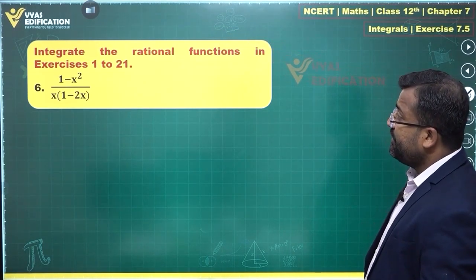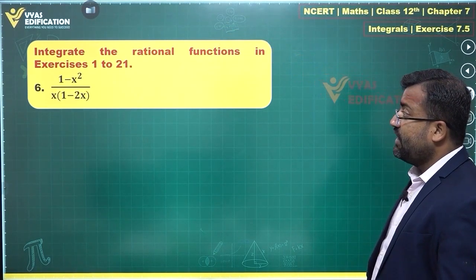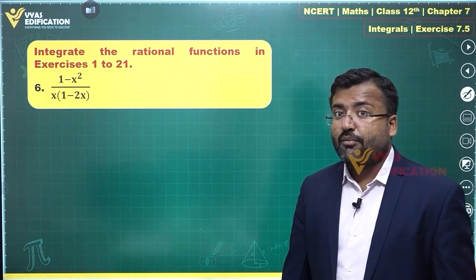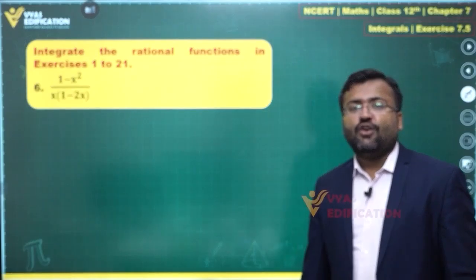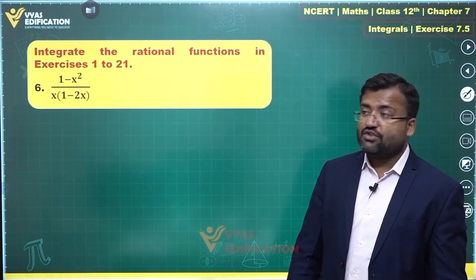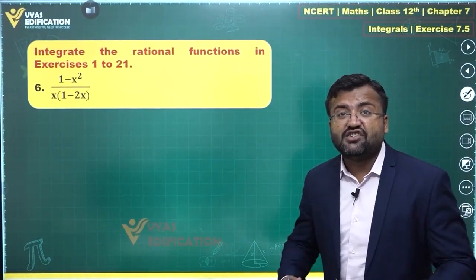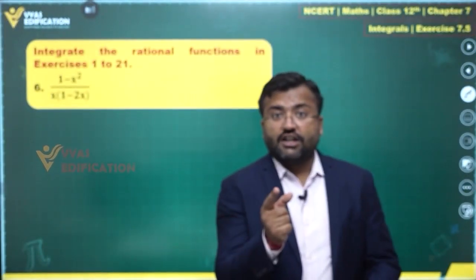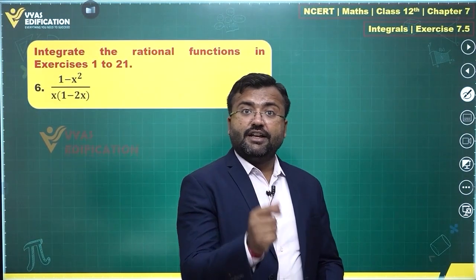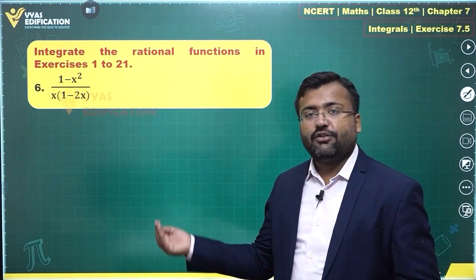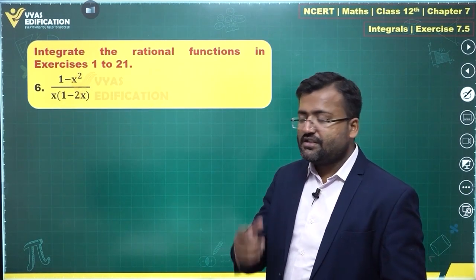The sixth question gives us 1 minus x square upon x times 1 minus 2x. Remember the steps for integration: before integrating, we need to check whether this is a proper rational function, that is, whether the degree of the numerator is less than the degree of the denominator. If not, we'll have to divide using long division first, and then convert into partial fractions after that.